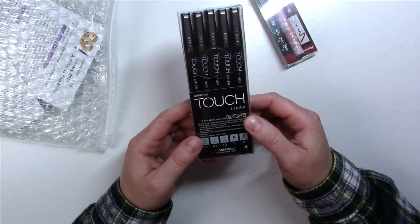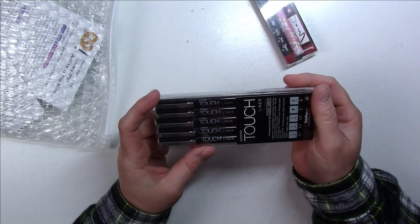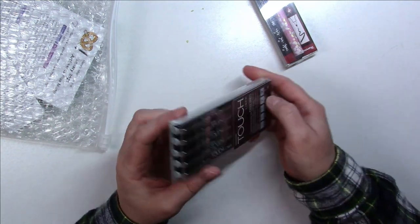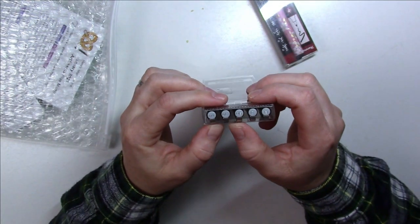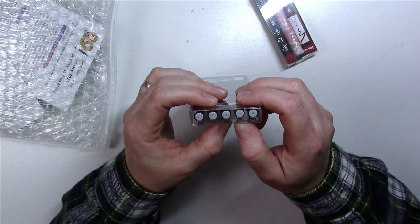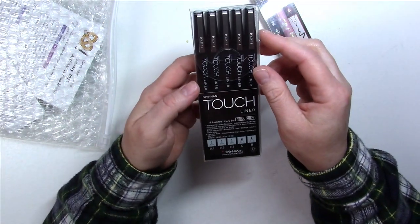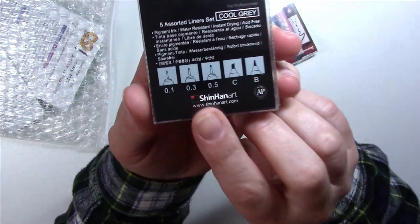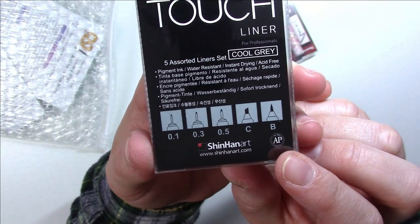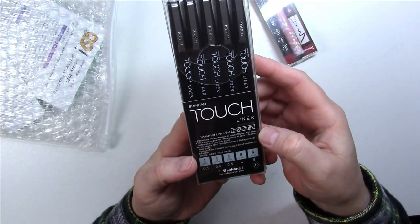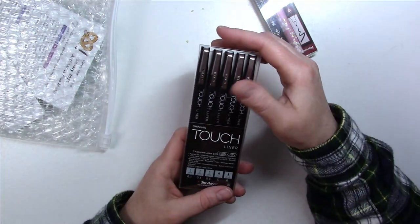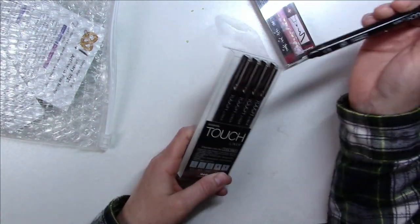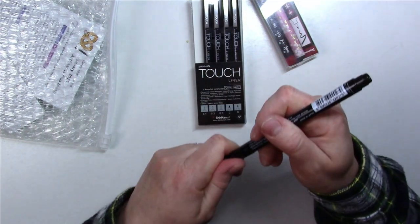We've got the Shinhan Touch Liners, it's a pack of five. It comes with a 0.1, 0.3, 0.5, a brush and a chisel. Oh yeah, right there. And they're cool grays, nice. See, that's a nice change. You kind of think oh more liners, but when it's in a different color that's kind of neat.